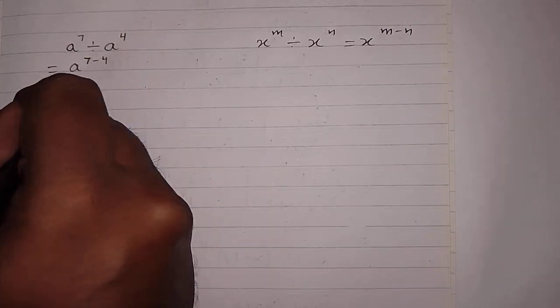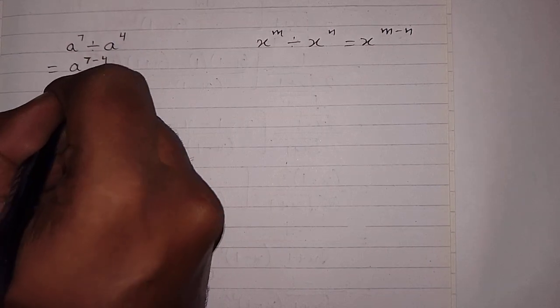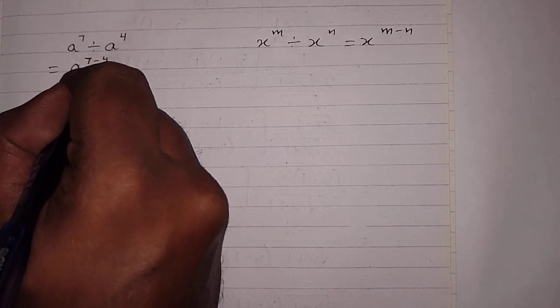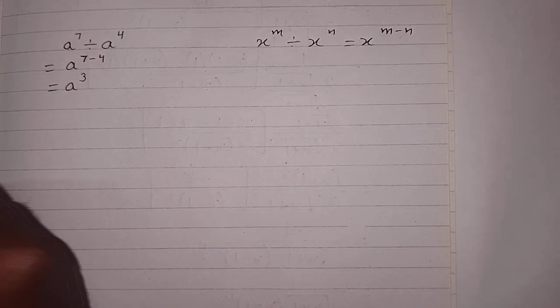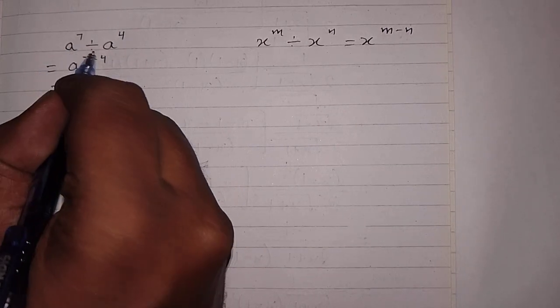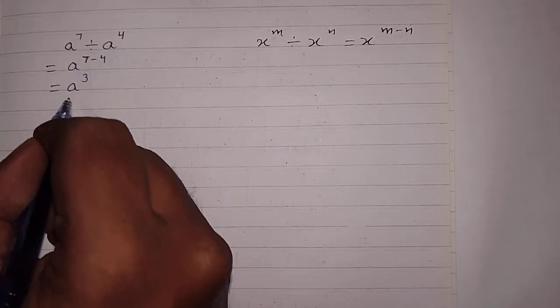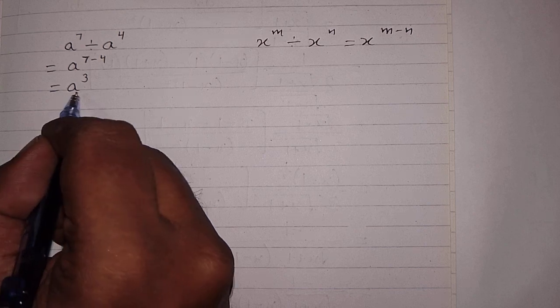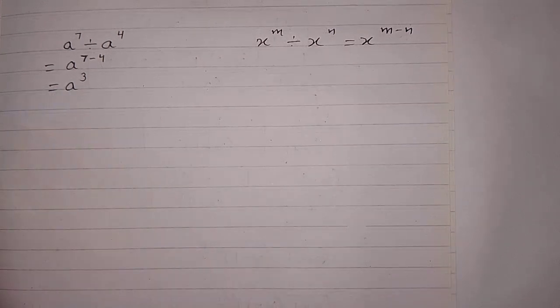And 7 minus 4 is 3, so we have a raised to the power 3. Therefore, a raised to the power 7 divided by a raised to the power 4 is equal to a raised to the power 3.